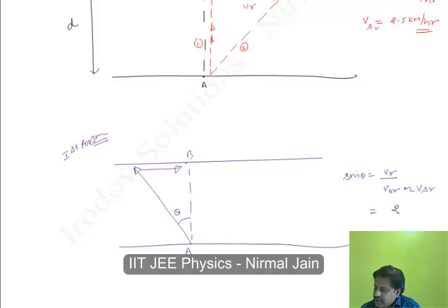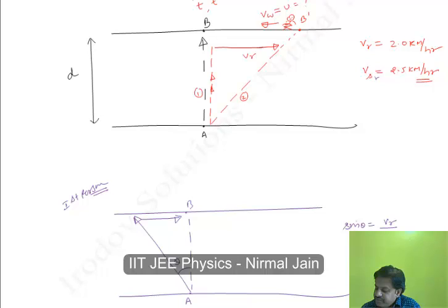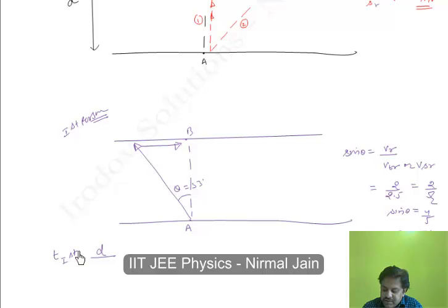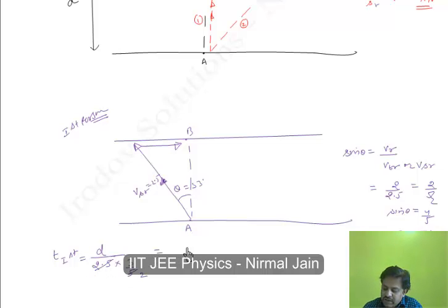In this case, sin θ = 2 / 2.5 = 4/5, so θ = 53°. The first person moves at 53° upstream. The time taken by the first person is T1 = D / (Vsr · cos 53°). Since cos 53° = 3/5, we get T1 = D / (2.5 × 3/5) = 2D/3. This is the time taken by the first swimmer.